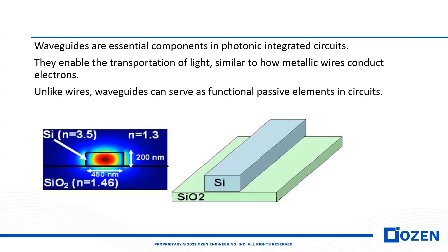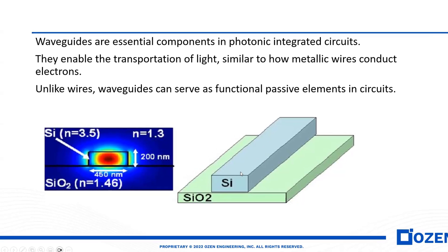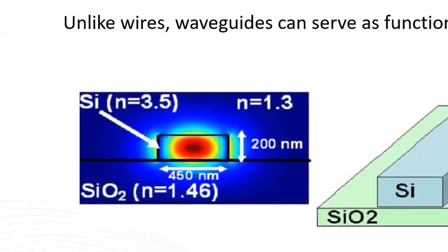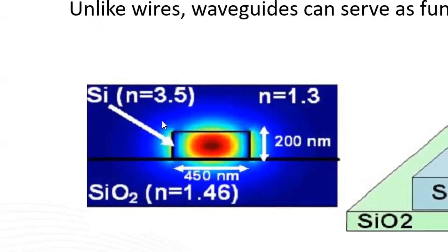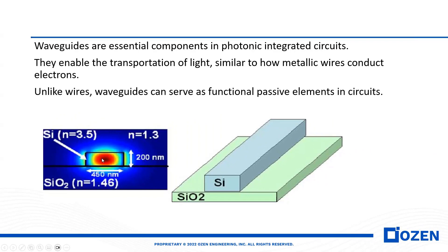In this picture you can see silicon on top of SiO2. The refractive index of silicon is around 3.5 and the refractive index of SiO2 is around 1.5. This is a simple waveguide, and the red and blue color you can see in this picture is the waveguide mode — the distribution of light through the waveguide. As you see, the light confines through the waveguide.